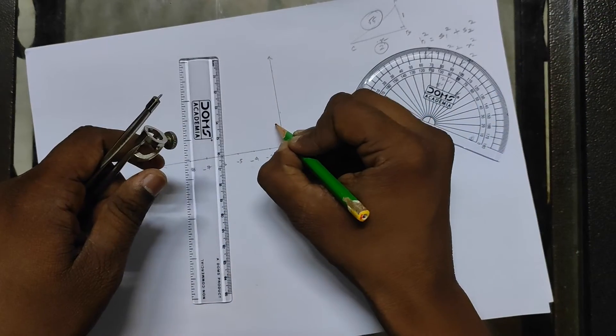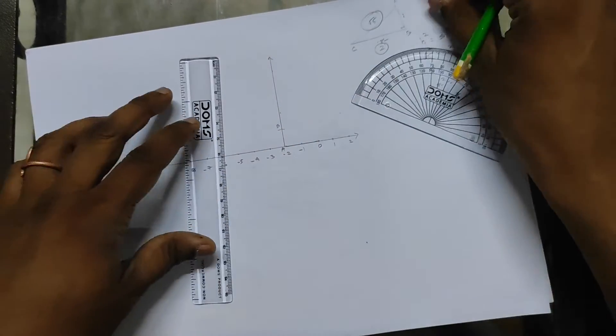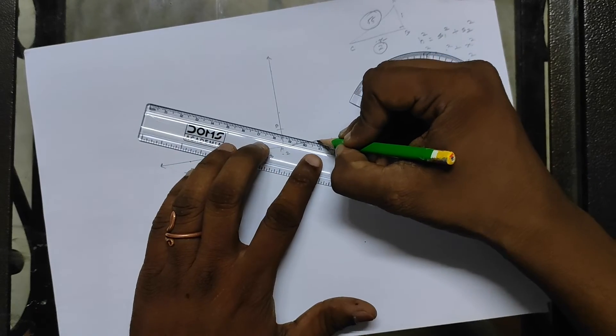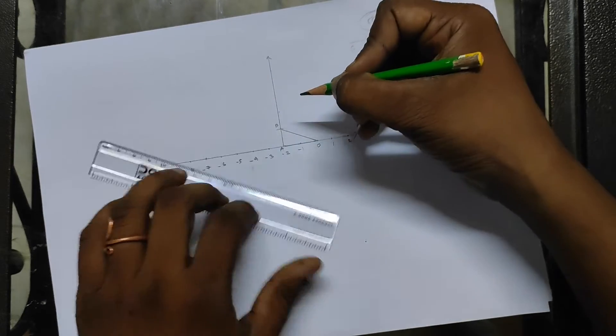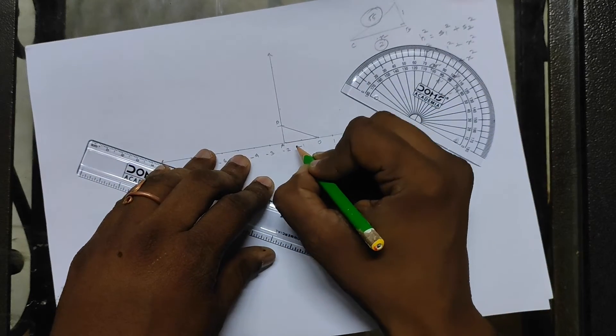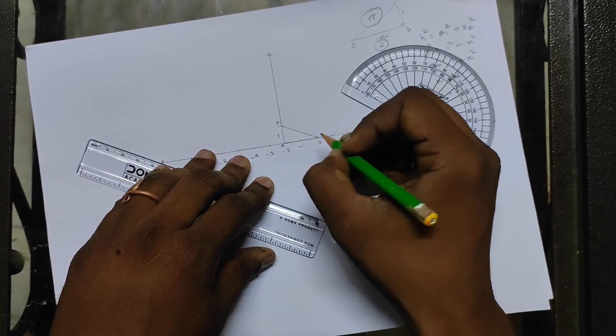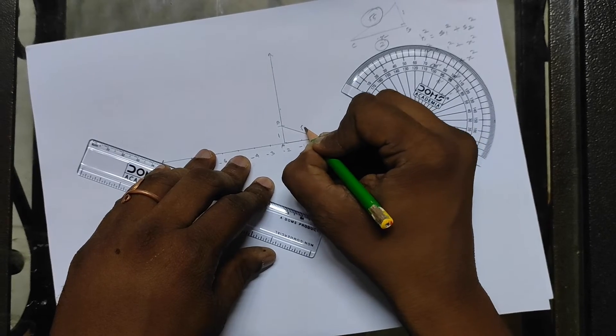And we are going to cut this line now. Let me call it as point B, and then we just have to join O and B, that's it. Okay, so I know this is two units, this is one unit, so obviously this will be root 5 units.